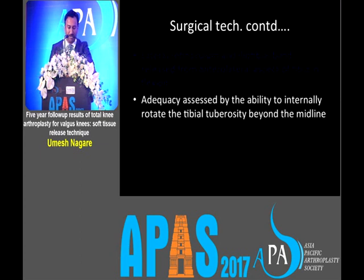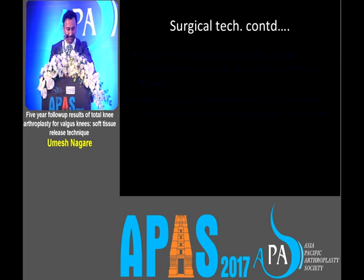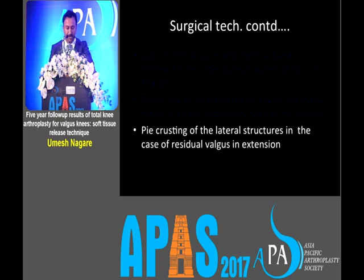We then assess release adequacy by evaluating the ability to internally rotate the tibial tuberosity beyond the midline. If you achieve this, then we proceed with further steps. Then pie-crusting of the lateral structures is done in case of residual valgus in extension.